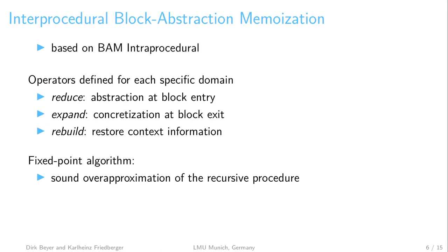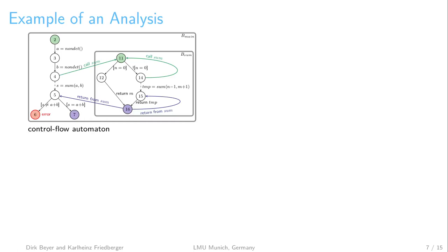We will now present an example of how to apply this algorithm to the previously given example program. We apply a predicate-based domain combined with our new approach for interprocedural program analysis to verify this program as correct. We assume that the predicate-based domain already has the necessary predicates. For this program, our fixed-point algorithm requires two iterations. In the first iteration, the non-recursive part of the procedure sum is analyzed and the procedure summary is computed. This procedure summary is then applied in the second iteration to summarize the recursion, and the fixed-point algorithm terminates because the procedure summary is sufficient.